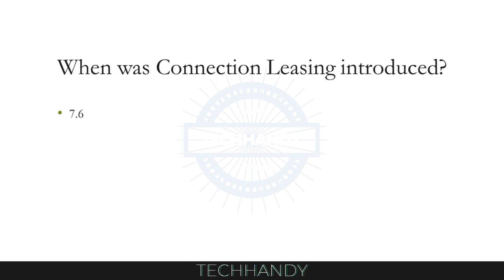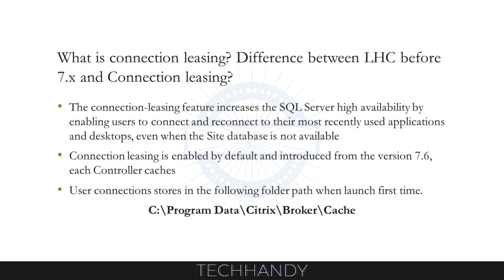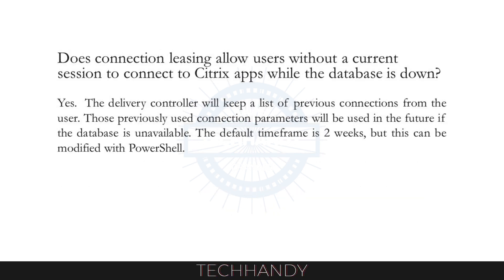When was connection leasing introduced? Connection leasing was first introduced in Citrix ZenApp and ZenDesktop 7.6. The connection leasing feature increases SQL Server high availability by enabling users to connect and reconnect to their most recently used applications and desktops, even when the site database is not available. Connection leasing is enabled by default from version 7.6. Does connection leasing allow users without a current session to connect to Citrix apps while the database is down? Yes. The delivery controller keeps a list of previous connections from the user. Those previously used connection parameters will be used if the database is unavailable. The default time frame is two weeks, but this can be modified with PowerShell.